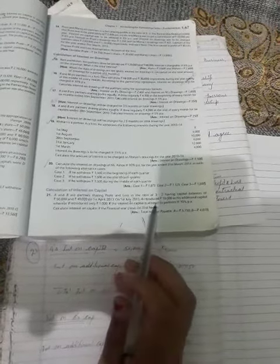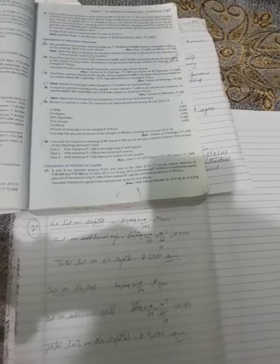The interest on capital allowed to partners is 10% per annum. Calculate interest on capital if the financial year closes on 31st March. So let's start the numerical.